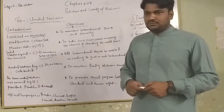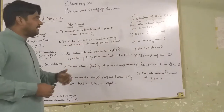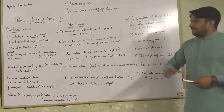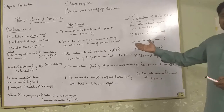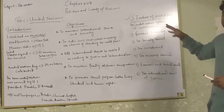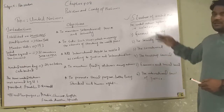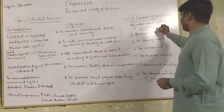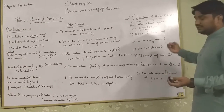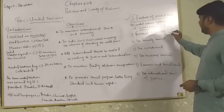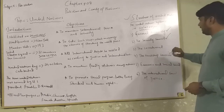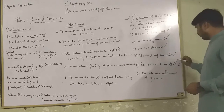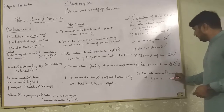The structure of the United Nations is based on six organs. These six organs are: 1. General Assembly, 2. Security Council, 3. Secretariat, 4. Trusteeship Council, 5. Economic and Social Council, 6. International Court of Justice.